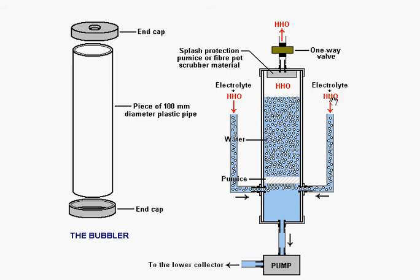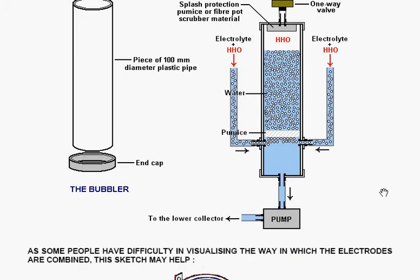Now the bubbler gets fed a mixture of HHO bubbles and the electrolyte which is rainwater. And it gets fed in from each of the two cells. There are two pieces of splash protection material, pumice or fibre pot scrubber material. The idea is to catch any splashes and to allow gas through and let the splashes drip back into the container itself. There is also a pumice piece down near the bottom. And that keeps the bubbles going upwards and the water going downwards. The water goes down to the pump and goes on to the lower collector.